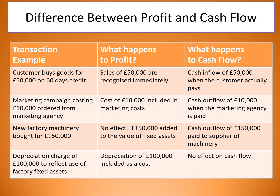A depreciation charge of £100,000 to reflect the use of factory fixed assets — so machinery is getting dated and you reckon it's worth £100,000 less than when you got it. That depreciation of £100,000 needs to come off your profit; you need to recognise that if you tried to sell the machine you would no longer get the same amount for it. But for cash flow — nothing happens, because it isn't actually money you can spend. Depreciation won't affect your cash flow but it will affect your profit.